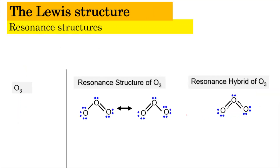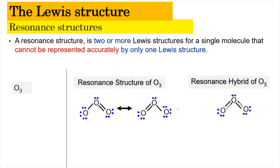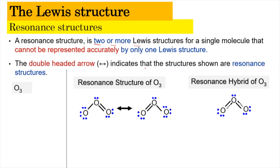Resonance structures are basically two or more Lewis structures for a single molecule that cannot be represented accurately by only one Lewis structure. The resonance structures are represented by using a double-headed arrow, as shown here, indicating that the structures are resonance structures.